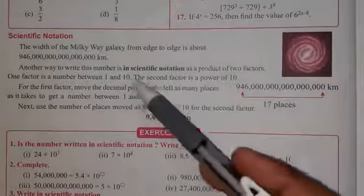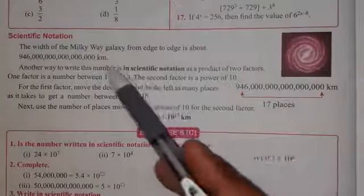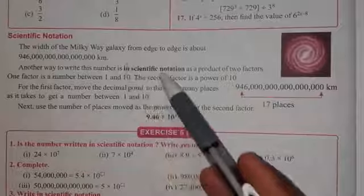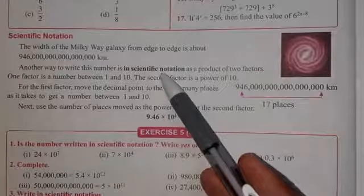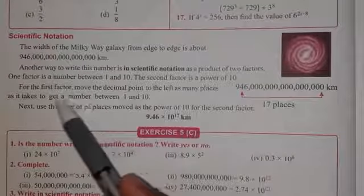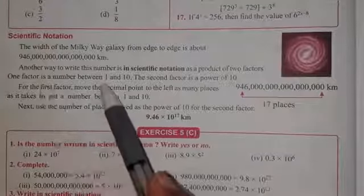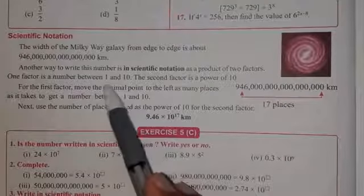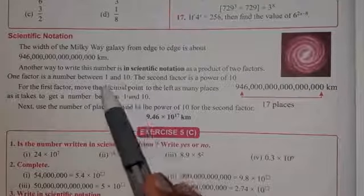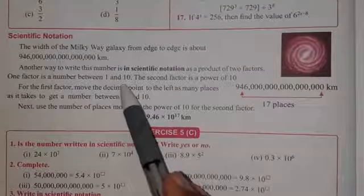The first thing is that when we want to write a number in scientific notation, there are two factors. The first factor is a number between 1 and 10.